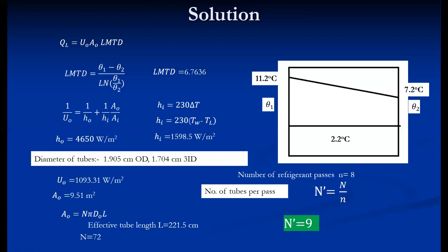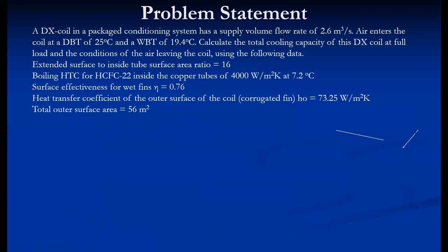So there are nine tubes per pass. For any evaporator or condenser problem, first recognize whether to use the LMTD or NTU approach, then apply the relevant equations. The second numerical example involves a DX dehumidifying coil — a DX coil in a package air conditioning system, as opposed to the previous DX chiller which produced chilled water.